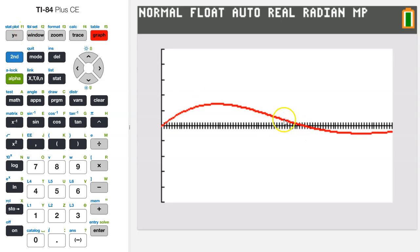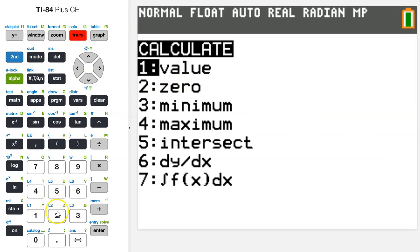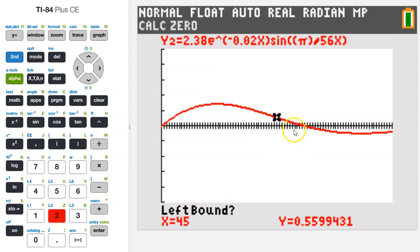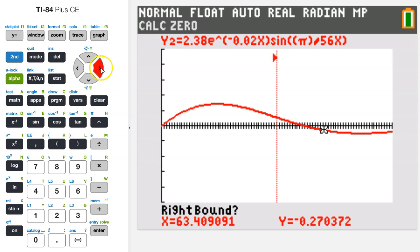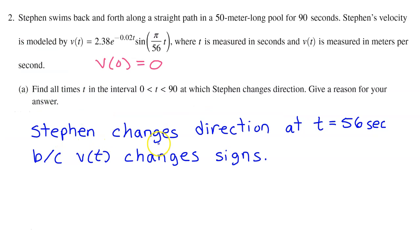One way to find the time when velocity changes signs is to use the zero feature on the calculator. Hit 2nd trace and choose option 2 for zero. It's asking us for a left bound, so just make sure that the pointer is to the left of the zero and hit enter. Now it's asking for a right bound, so use your arrow keys to move the pointer somewhere to the right of the point of intersection and hit enter. And then now it's asking for a guess. I just like to move the pointer back as close as possible to that point of intersection and hit enter again. So the zero is at t equals 56. So the answer is Stephen changes direction at t equals 56 seconds because velocity changes signs. Be sure to mention the units.